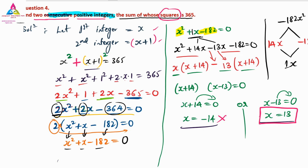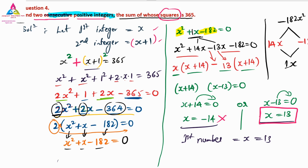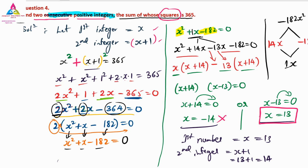Therefore: the first positive integer equals X equals 13. The second integer equals X plus 1 equals 13 plus 1 equals 14. The two consecutive positive integers are 13 and 14. Note: if we had taken X equals minus 14, then X plus 1 would be minus 13, which are not positive integers — so only X equals 13 is valid.